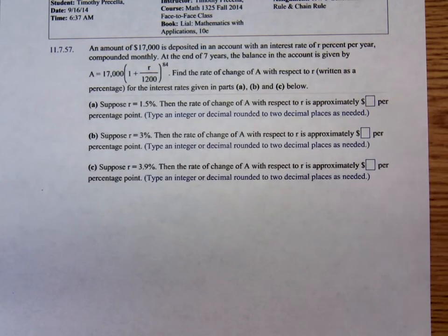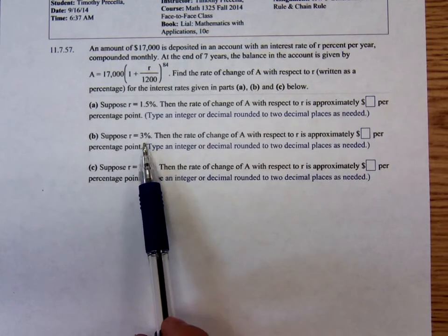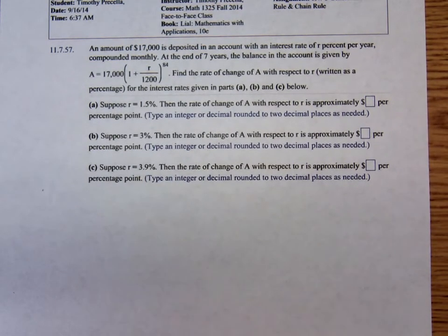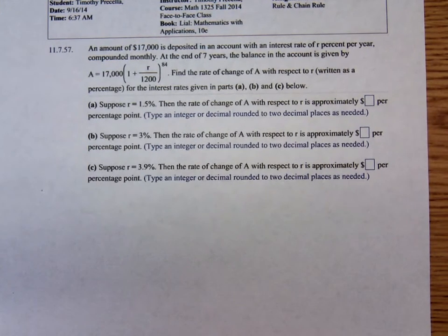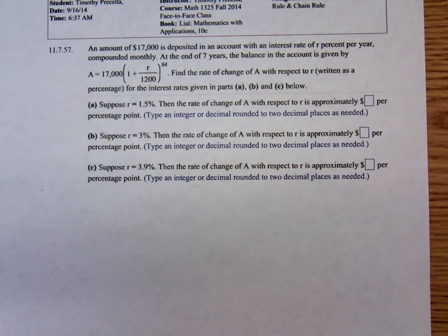For the interest rates given in parts a, b, and c. Part a asks us to plug in one point five percent, part b three percent, and part c three point nine percent. We'll just work through part a because parts b and c are just plugging in different numbers.